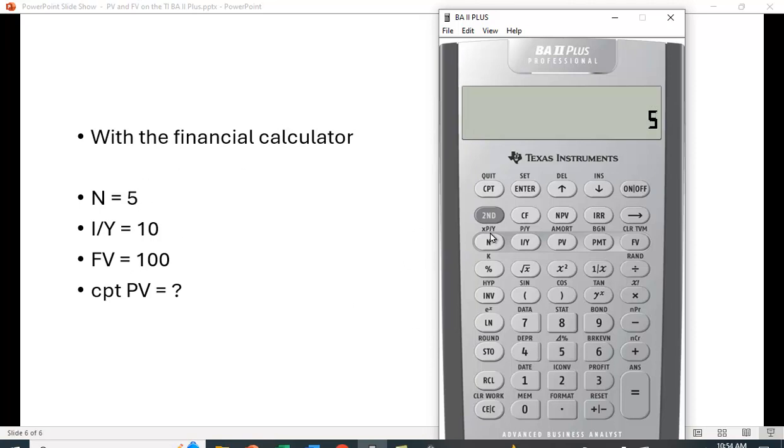Again, we're going to put in 5 for N. That's the number of years. 10 is the interest rate. This time we're going to put in the future value of 100. And we're going to compute the PV. And we get 62.09.